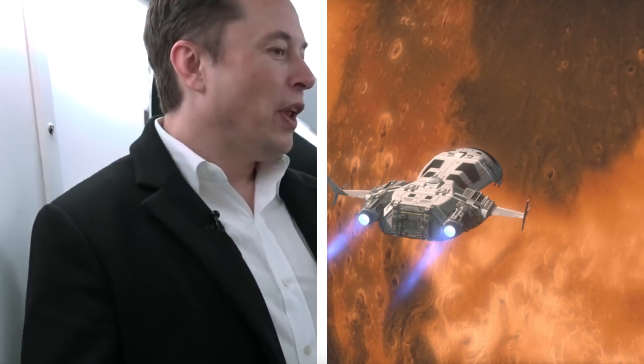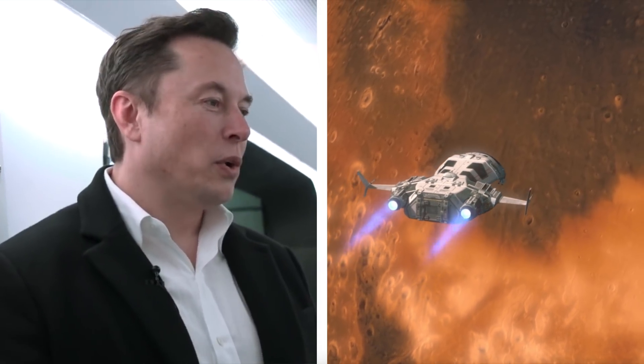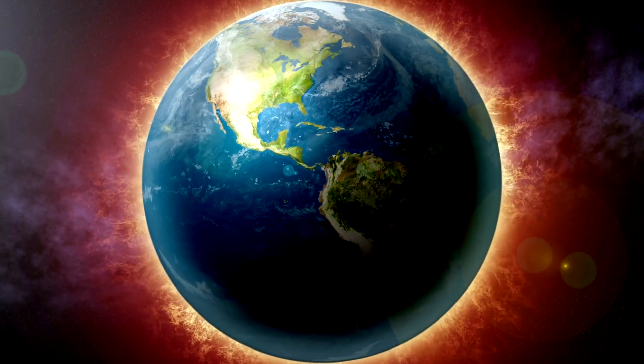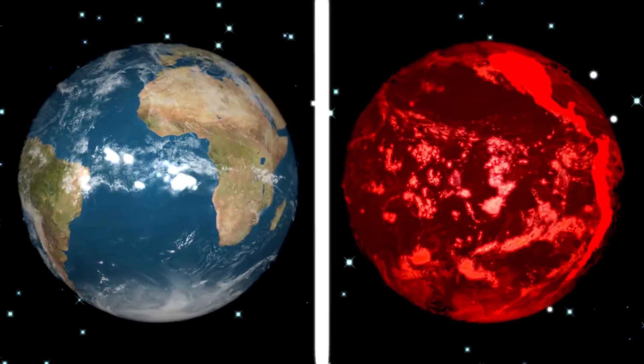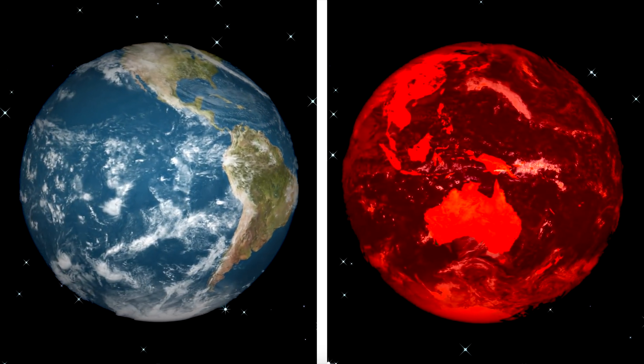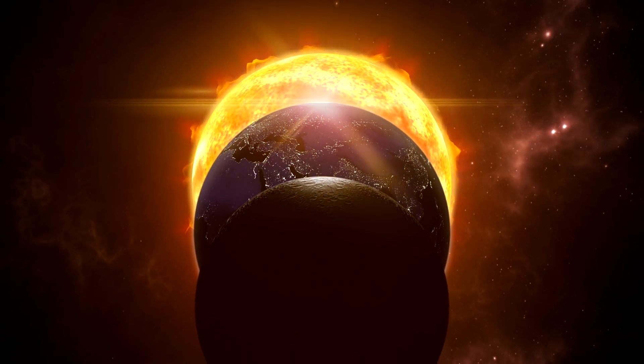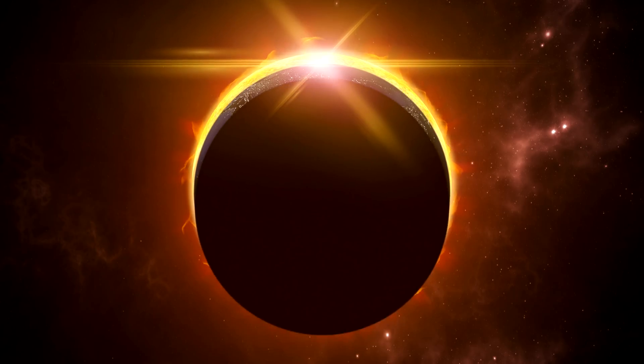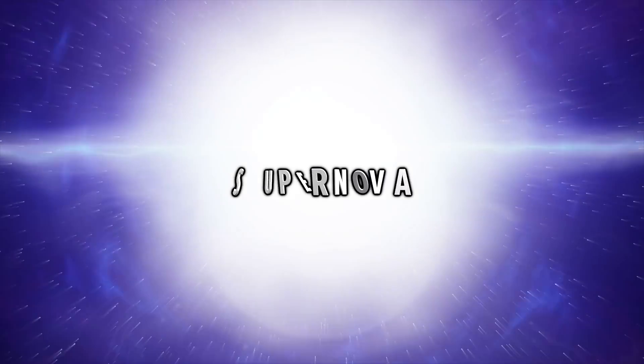For example, many people like Elon Musk want us to move to Mars. But even if Earth did survive, it would never be the same again. It would turn from a blue and green planet to a red planet like Mars. The sun gives us life right now, but it can also take that life away.